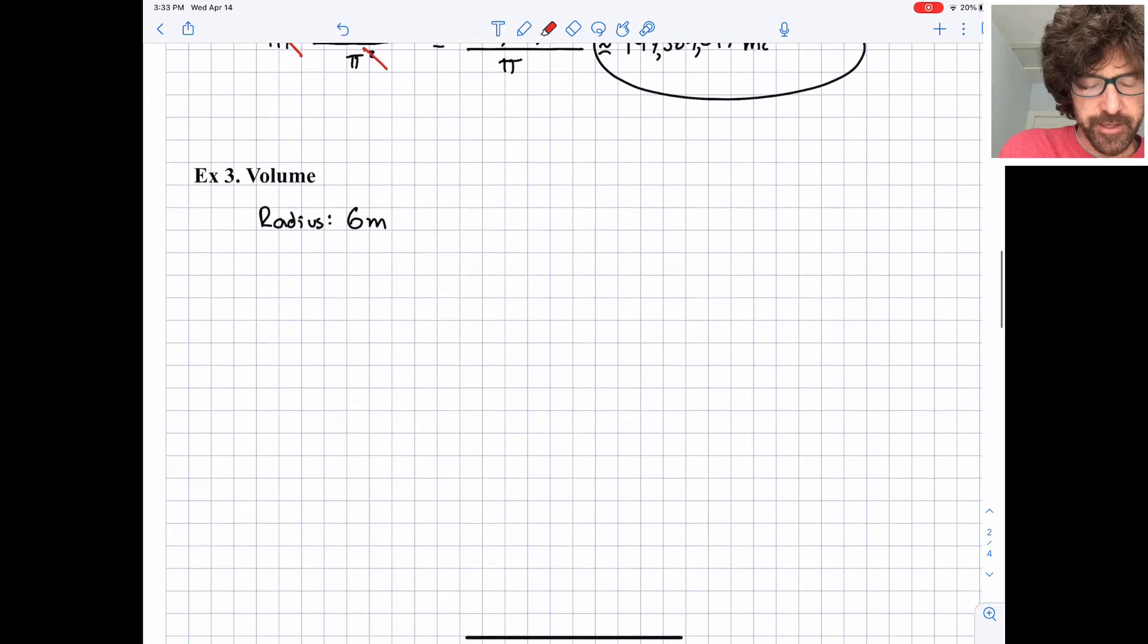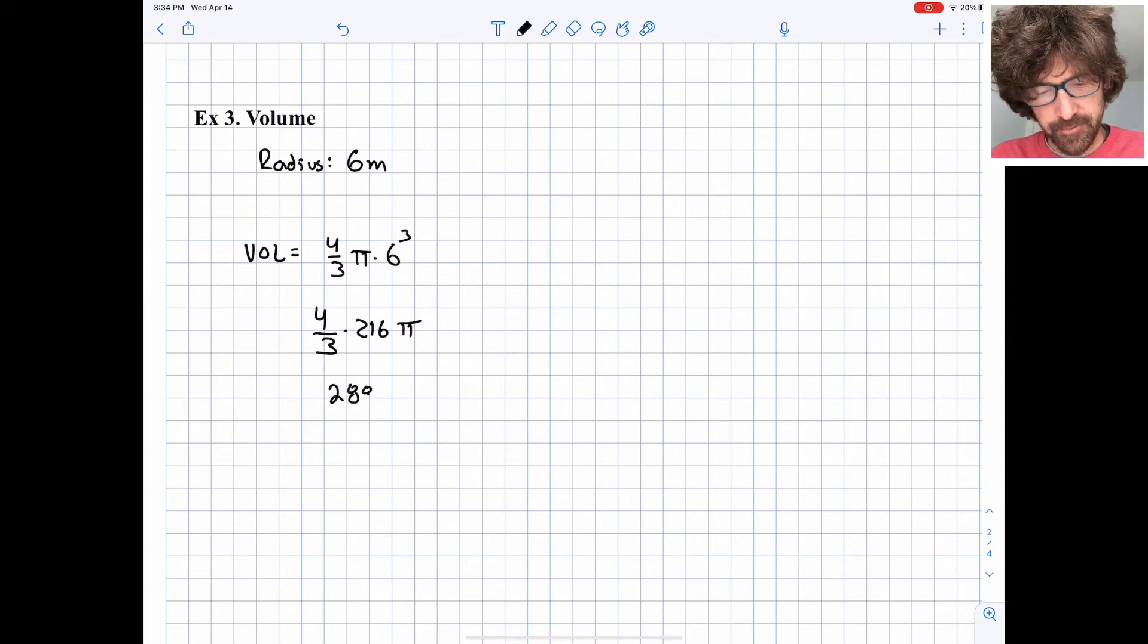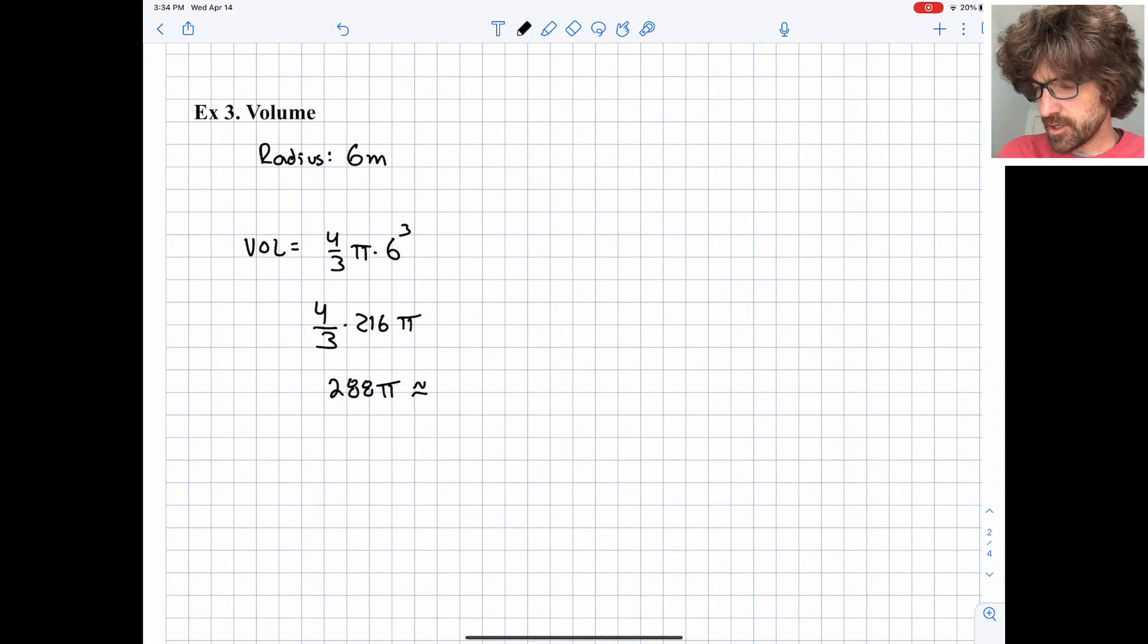Let's practice finding volume a little bit. We have the volume of a sphere with a radius of 6 meters. So remember our volume formula is 4/3π times 6³. Don't forget to cube the 6, 6 times itself 3 times. And again, what I always like to do is do everything except the π and save the π for the very end. And so this is exactly 288π cubic meters, which is approximately 904.78 cubic meters.